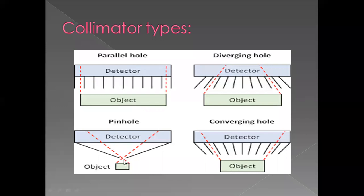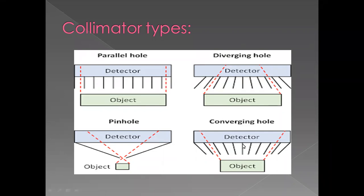We also have the Divergent Hole Collimator, which is used for big organs such as abdominal organs, or for large patients. When we have a small field of view and big organs, we use the divergent collimator. The benefit of this collimator is that it makes the organ look smaller in our image. And we have the last one, the Convergent Hole Collimator, which is the opposite of the divergent. For small organs like the thyroid, the convergent hole will make the gland or organ appear bigger in the image.